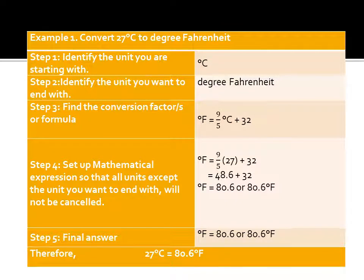Example 1: convert 27°C to degrees Fahrenheit. Step 1: starting unit is degrees Celsius. Step 2: ending unit is degrees Fahrenheit. Formula: °F = (9/5 × °C) + 32. Substitute the Celsius value: °F = (9/5 × 27) + 32 = 48.6 + 32 = 80.6°F. Therefore, 27°C is equal to 80.6°F.